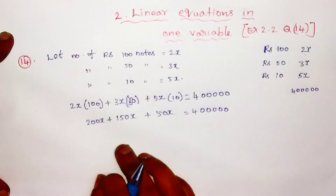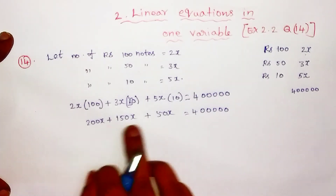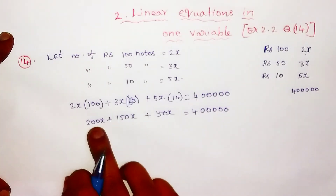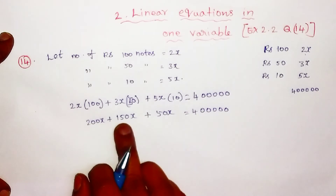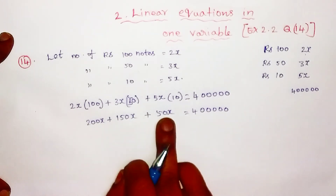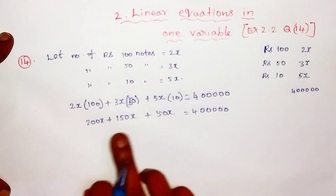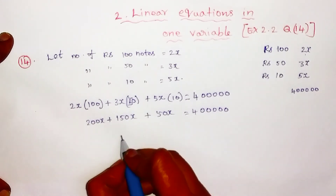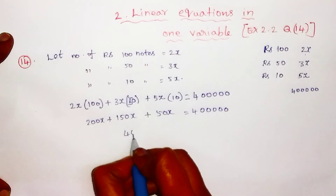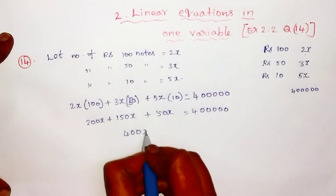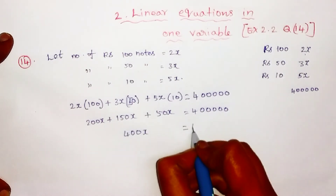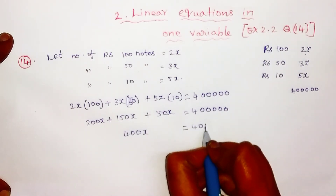Adding 200, 150, and 50 together gives 400x equal to 4 lakhs.